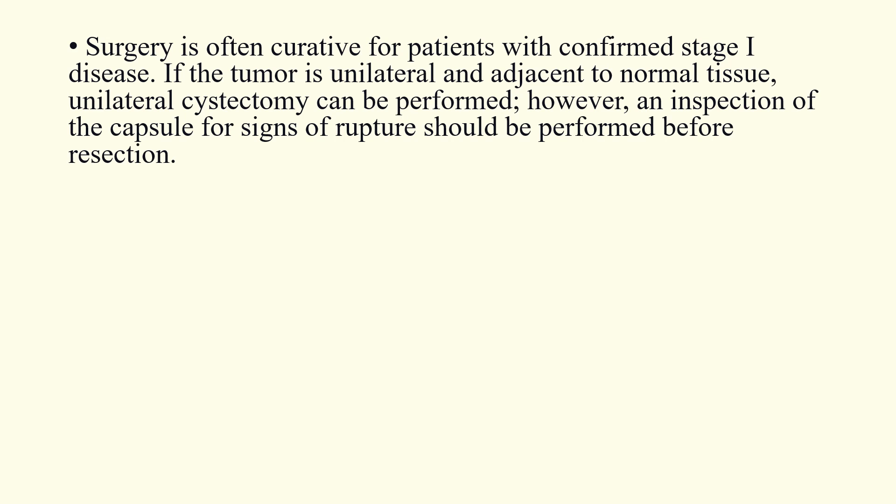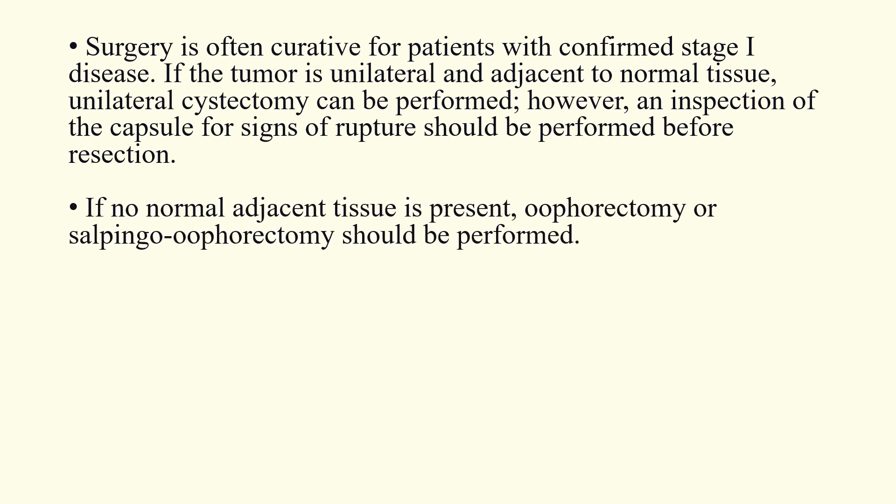Surgery is often curative for patients with confirmed Stage 1 disease. If the tumor is unilateral and adjacent to normal tissue, a unilateral cystectomy is performed; however, the capsule should be inspected for signs of rupture before resection. If no abnormal adjacent tissue is present, oophorectomy or salpingo-oophorectomy should be performed.